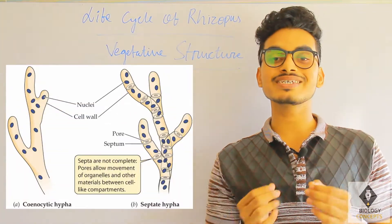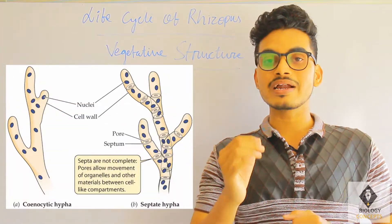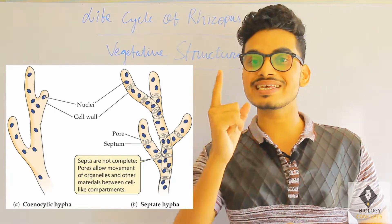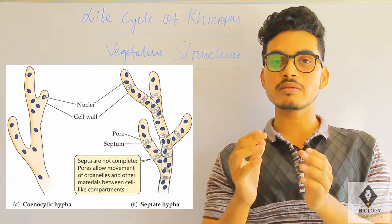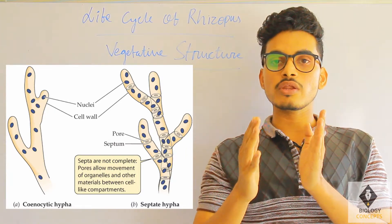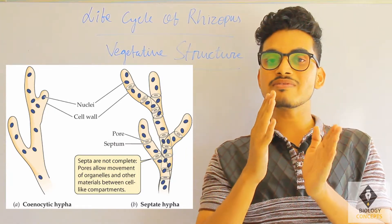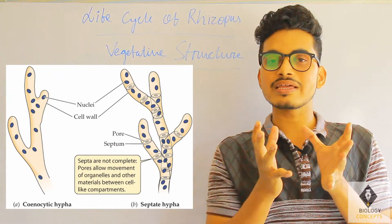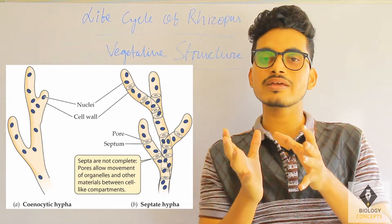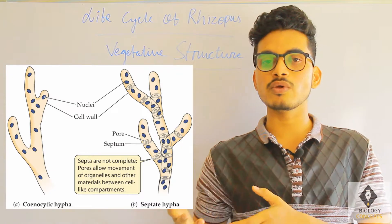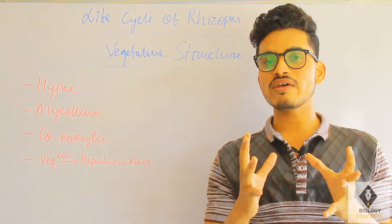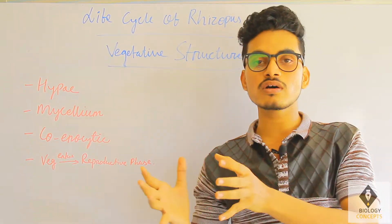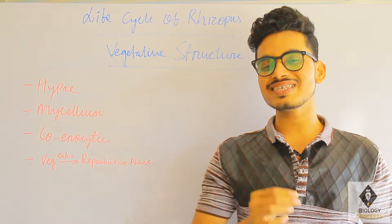The mycelium of Rhizopus is coenocytic. Coenocytic means the mycelium contains a number of nuclei in a single mycelium, and in between the nuclei there is no cross wall. That is how a single mycelium contains many nuclei.